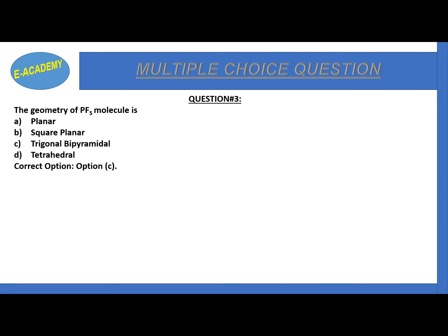Here we can say that five fluorine atoms are surrounded by phosphorus. Phosphorus is the central atom with five fluorine atoms around it. This gives us trigonal bipyramidal.